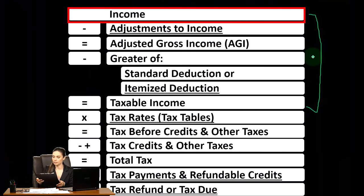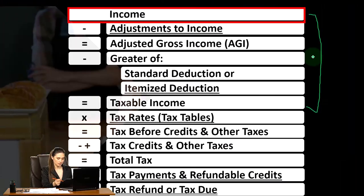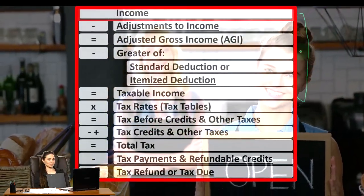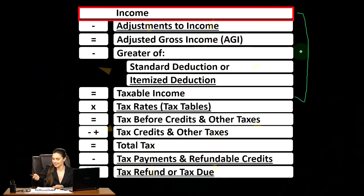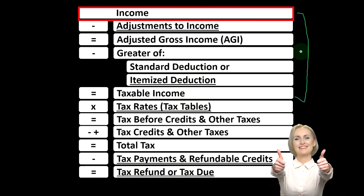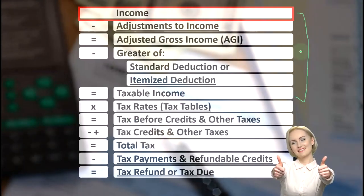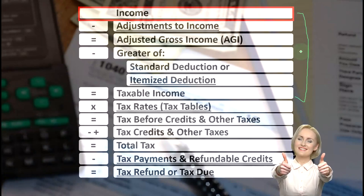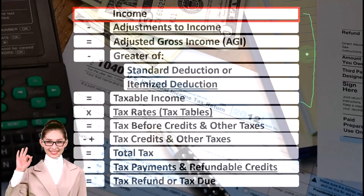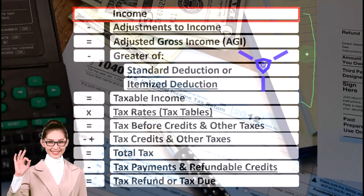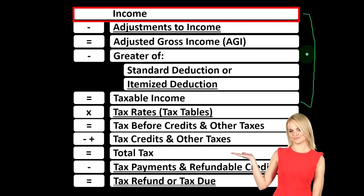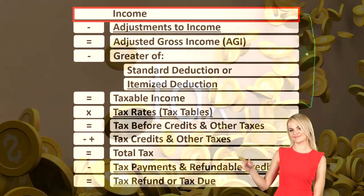If you're doing higher-complication returns, that usually means dealing with higher-income individuals or those with their own businesses. The question becomes whether you want to specialize in specific business-type returns. You can think about industry — such as construction or real estate — and about entity types: Schedule C, corporation, S corporation, partnership, LLC, and so on. Often the type of industry is tied to a specific type of tax return.